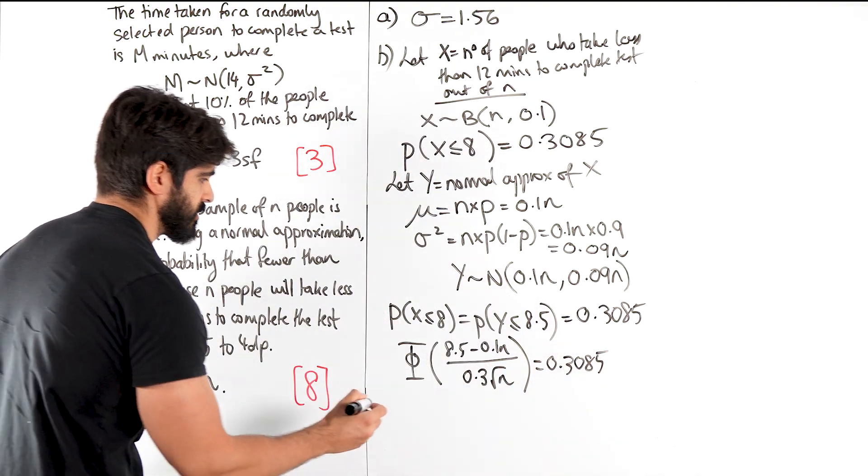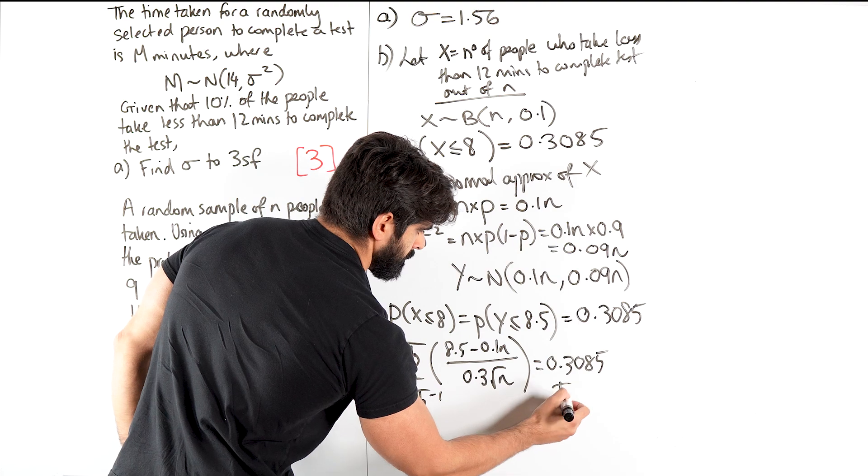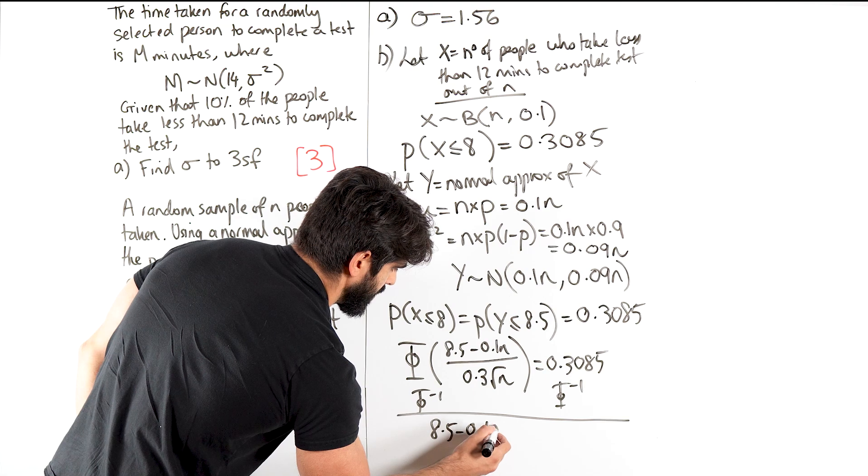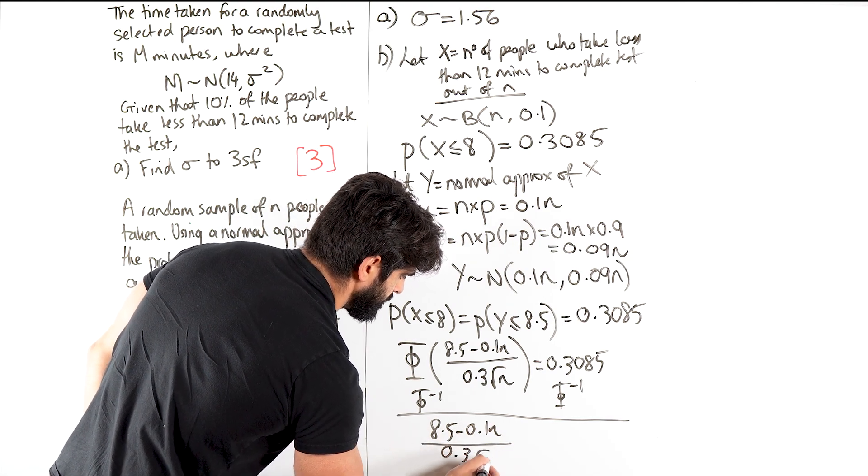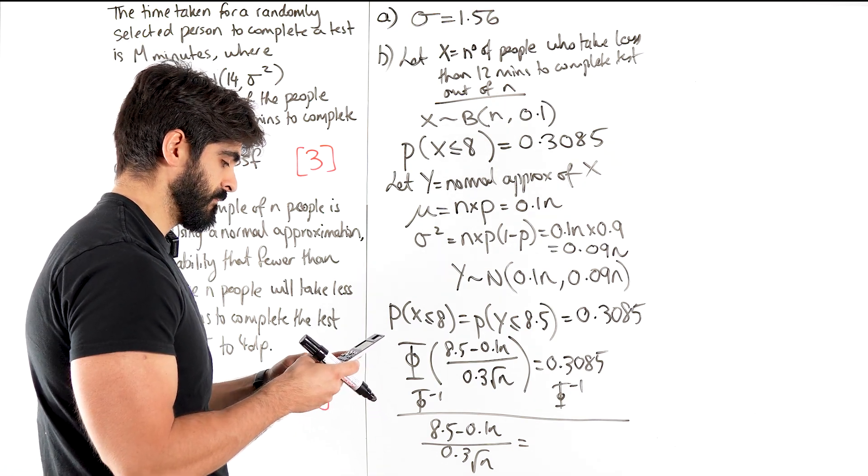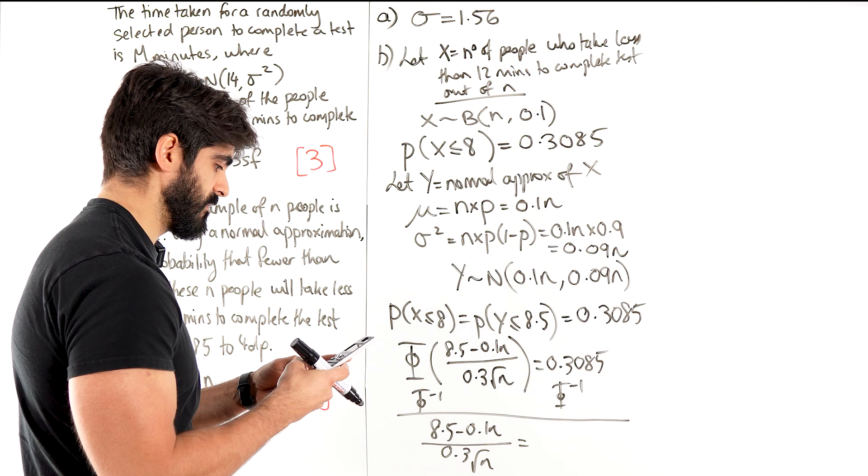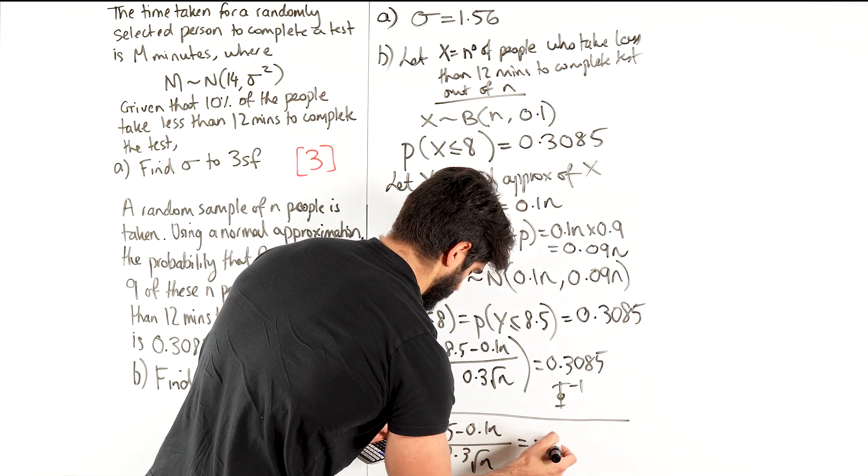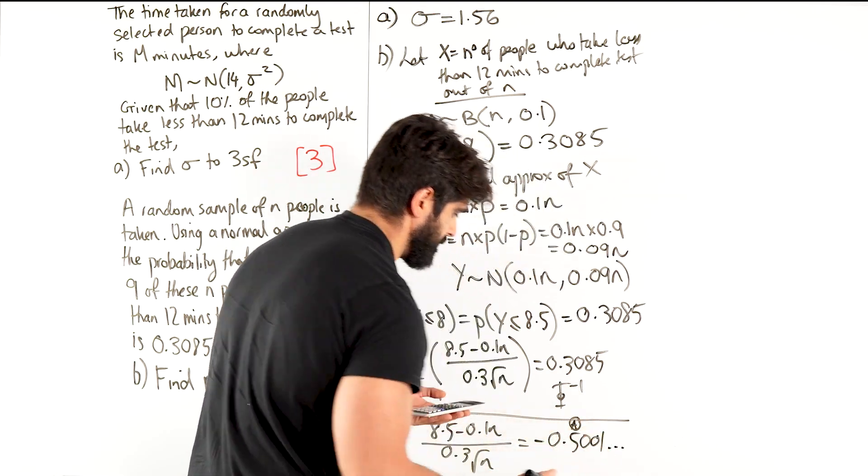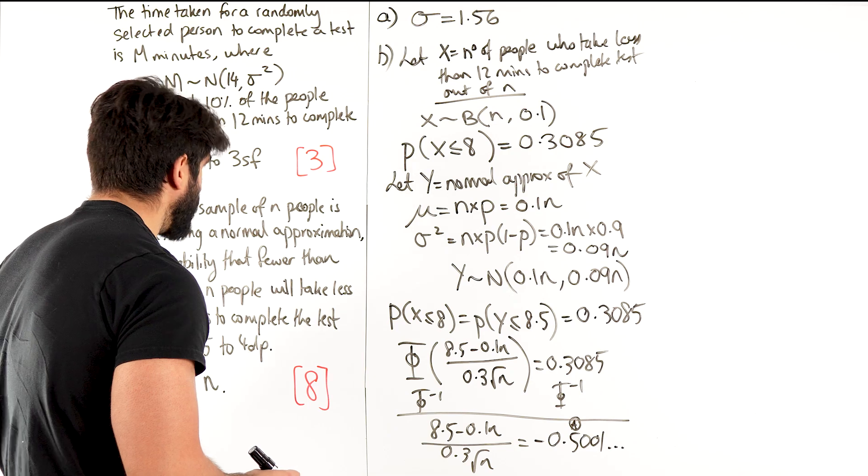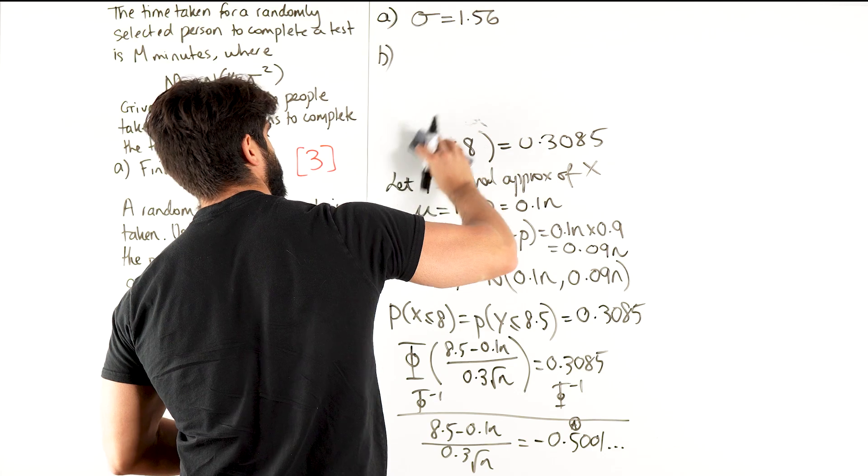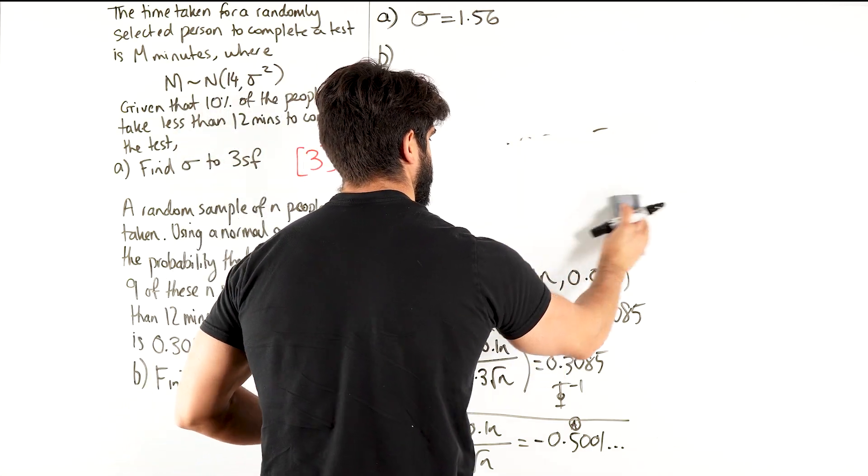This is why it's a juicy question. So we're going to inverse phi. Okay, so we get 8.5 minus 0.1n over 0.3 root n is, now when I do inverse phi, whatever value I get, I'm going to store it. So menu 7, inverse normal, 0.3085 minus 0.5, sorry, 0, 0, 1 dot dot dot. Now this value here I'm going to store as A. Okay, so now let's move up and continue with the rest of the working out.